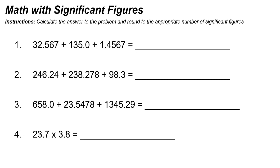In this video we are going to look at how to do math problems and answer with appropriate significant figures. The instructions say: calculate the answer to the problem and then round to the appropriate number of significant figures. The first step in all of these problems is just to do whatever mathematical operations are required, so you will need a calculator for this. I do have a calculator here.